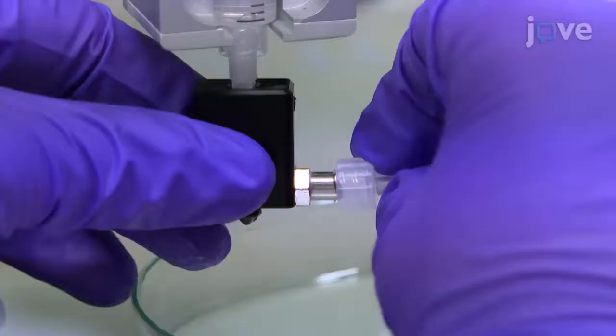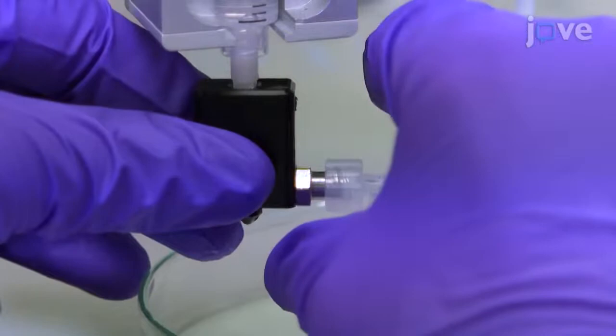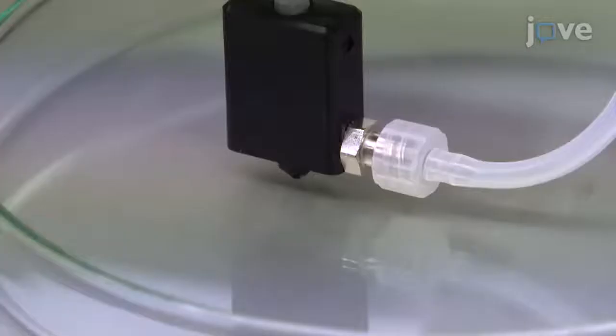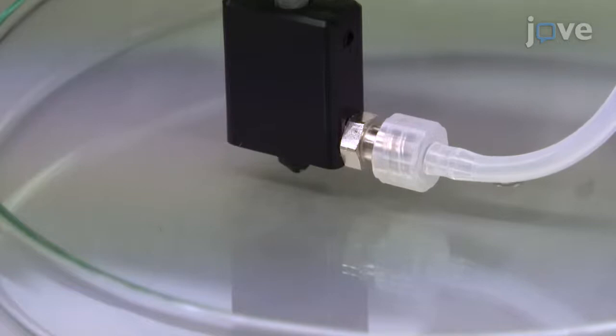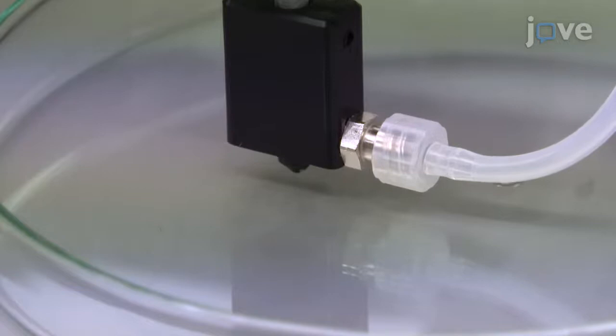Use a luer lock to connect a short tube to the side luer input of the coaxial nozzle. Carefully manually adjust the alignment until the nozzle touches the surface before retracting the nozzle to a distance equal to the outer nozzle diameter.